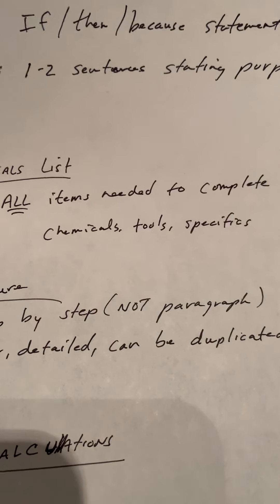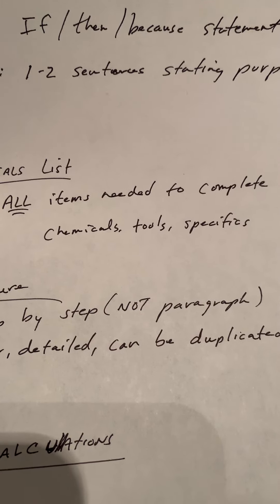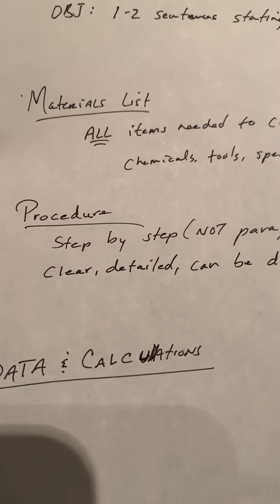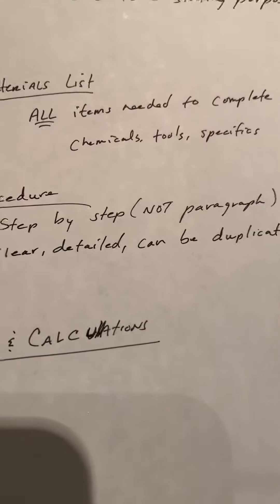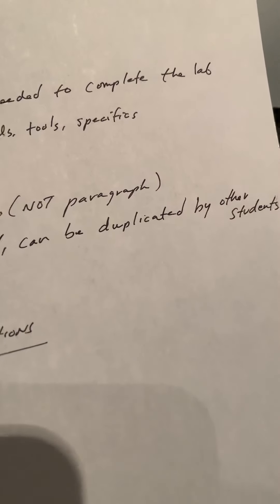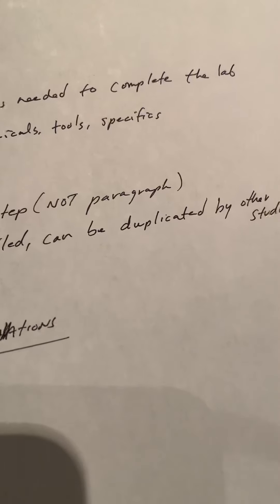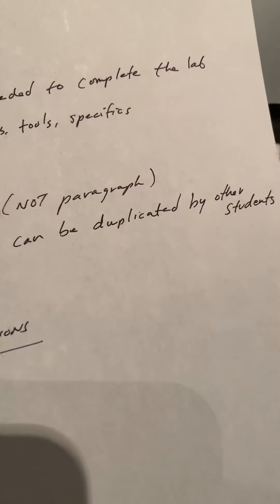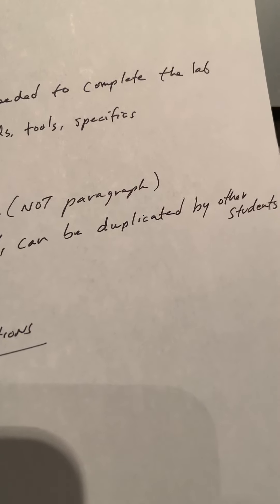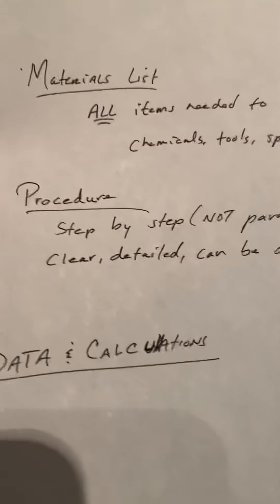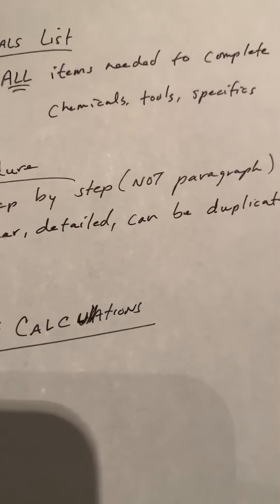Don't just say a test tube — what size test tube? Is it a 10 ml test tube or a 20 ml test tube? Once all the items are listed out, then you're going to move into the procedure section. Procedures are step by step; notice they are not in paragraph form. They need to be clear, detailed, and specific enough that they can be duplicated by other students. A student who had missed school that day should be able to take your procedure and perform the lab exactly as it was supposed to be done.